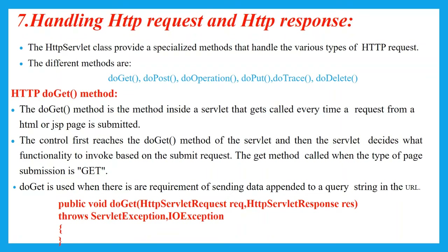Whenever there is a need to send a value without security concern, DoGet can be used. The general syntax of the DoGet method is: public void doGet, which takes two arguments. One argument is the request object belonging to the HttpServletRequest interface, and another is the response object belonging to the HttpServletResponse interface. This method throws ServletException and IOException, handled using the throws keyword.